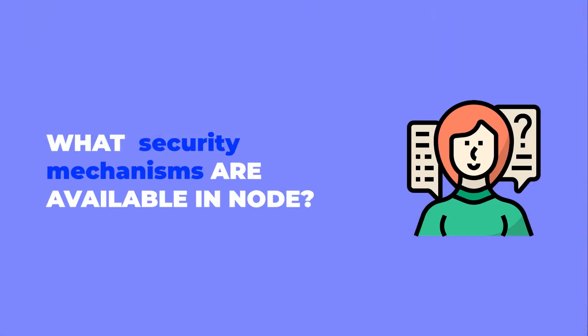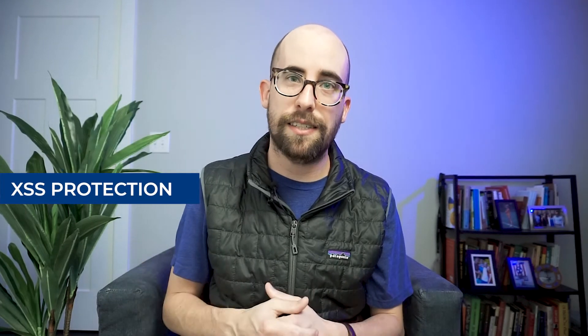Our fifth question is: what security mechanisms are available in Node? The standard security module in Node.js apps is called Helmet, which helps secure Express apps by setting a few HTTP headers. This includes X-Frame-Options, which helps mitigate clickjacking; cross-site scripting protection; XSS protection against XSS attacks; and Strict-Transport-Security, which helps keep your users on HTTPS. In an interview, I would look for at least a couple of those.